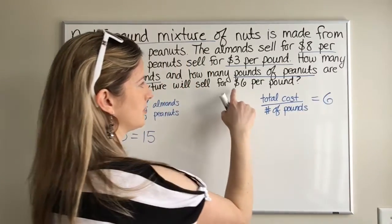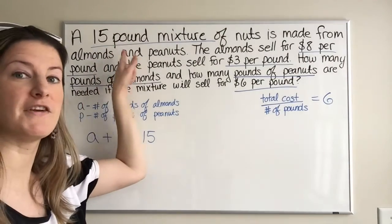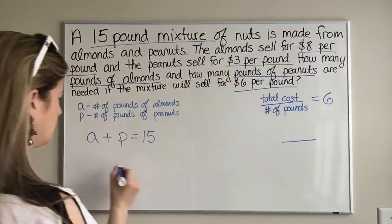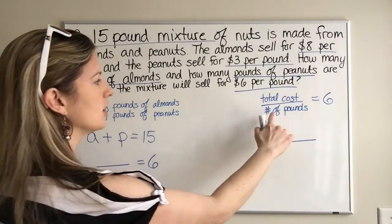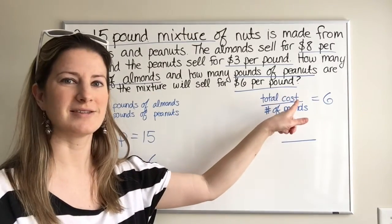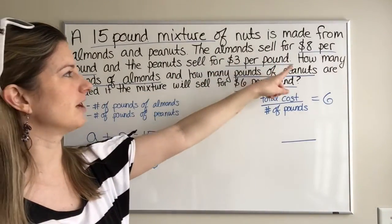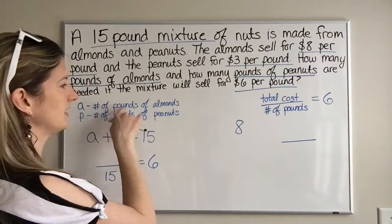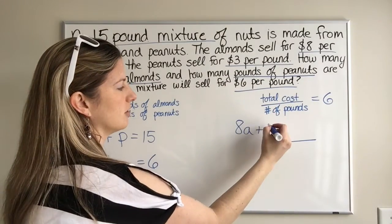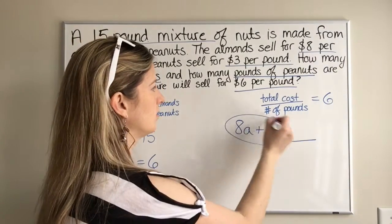We want that to equal 6, since the mixture sells for $6 per pound. We already know how many pounds we have — 15. Now the question is how do we find the total cost? Almonds sell for $8 per pound, so 8 times the number of pounds of almonds gives us the cost for almonds. Peanuts sell for $3 a pound, so 3 times the number of pounds of peanuts gives us the cost of peanuts. Together, these two give us the total cost.